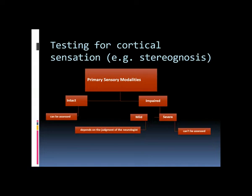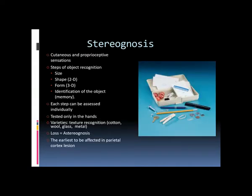Stereognosis is a cutaneous and proprioceptive sensation involving recognition of an object by its size, shape, form, and identity — tested only in the hand with eyes closed. For example, a coin or key placed in the hand should be recognizable. Inability to recognize common objects is called astereognosis, and it is the earliest sign affected in parietal cortex lesions.